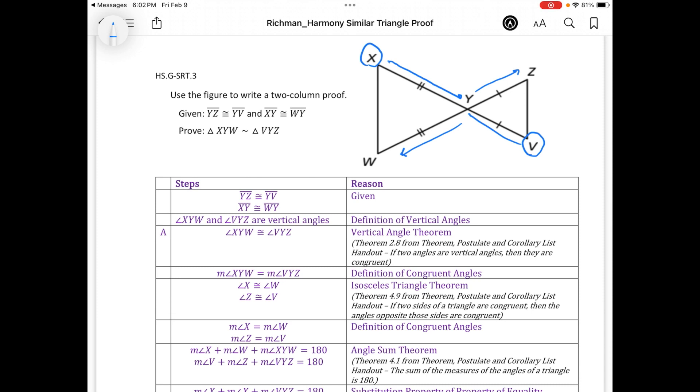Since we have vertical angles, I knew that angle XYW and angle VYZ are vertical angles using our vertical angle theorem. So I knew that they were congruent. And then because I knew they were congruent, I knew that their measures were equivalent to one another.